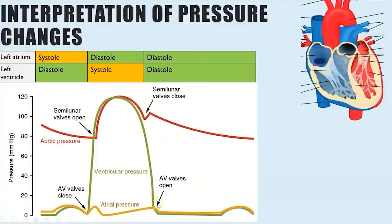For the atrioventricular valves on the graph: the atria are behind and the ventricles are in front. The AV valves open when atrial pressure exceeds ventricular pressure — the first crossover point on the graph. They remain open through the cycle and then close at the point where ventricular pressure first exceeds atrial pressure, forcing the AV valves shut.